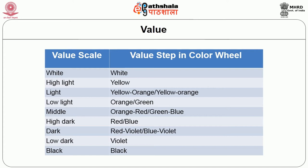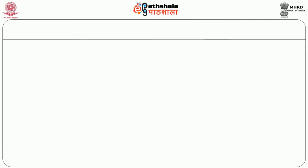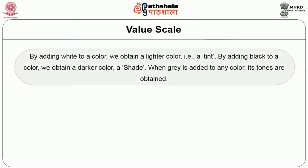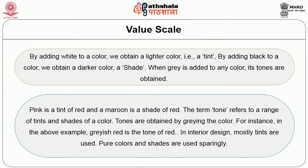The value scale continues: low light — orange and green; middle — orange, red, green, blue; high dark — red and blue; dark — red violet and blue violet; low dark — violet; black. By adding white to a color we obtain a lighter color — that is a tint. By adding black to a color we obtain a darker color — that is called a shade. When gray is added to any color, its tones are obtained. Thus, technically speaking, pink is a tint of red and maroon is a shade of red. The term tone refers to a range of tints and shades. In interior design, mostly tints are used; pure colors and shades are used sparingly.